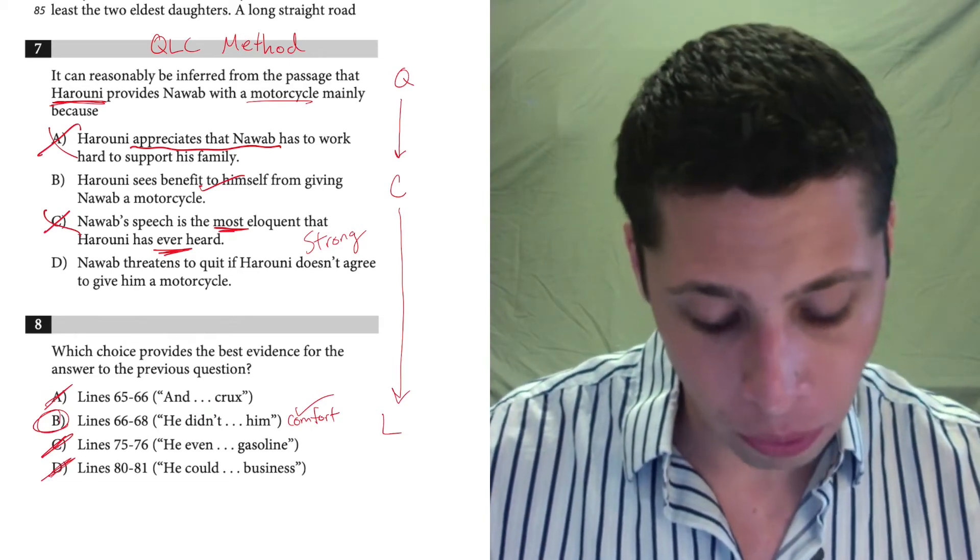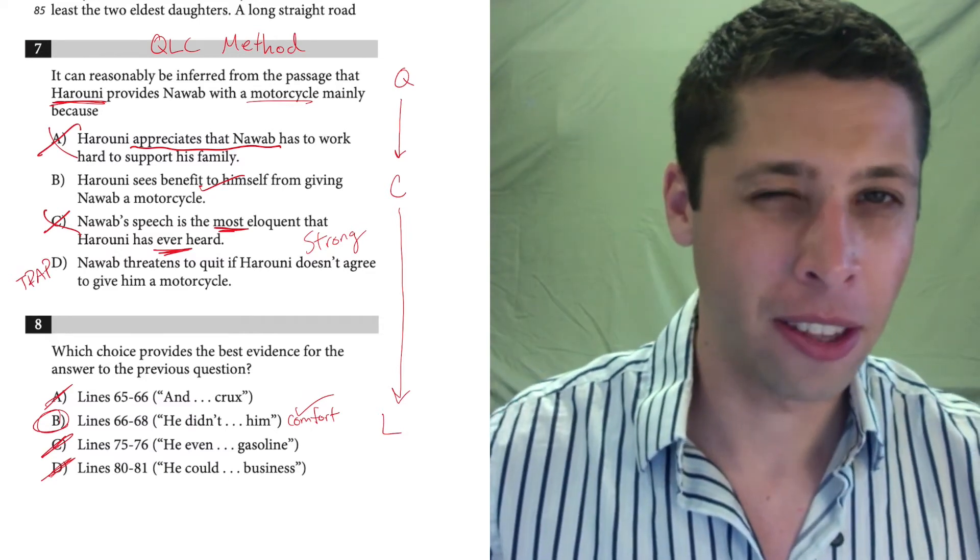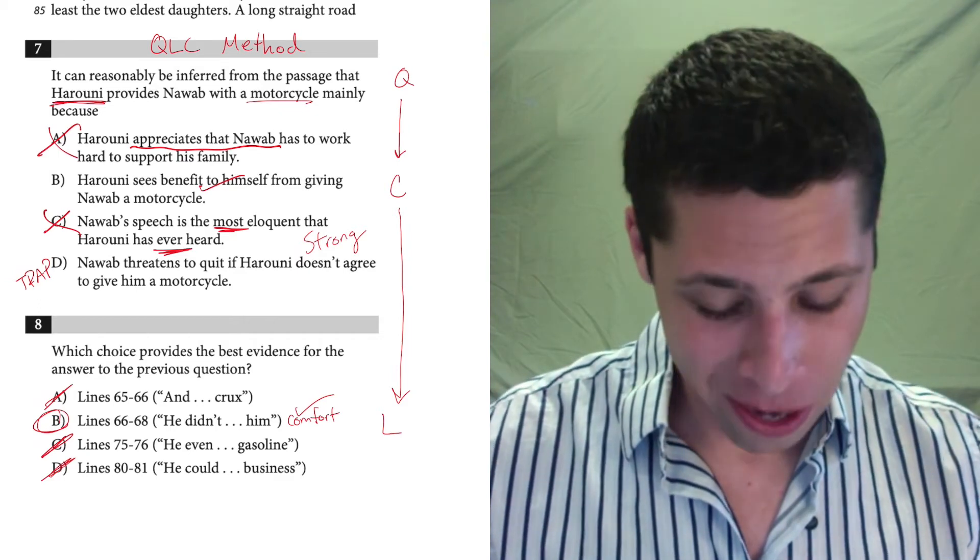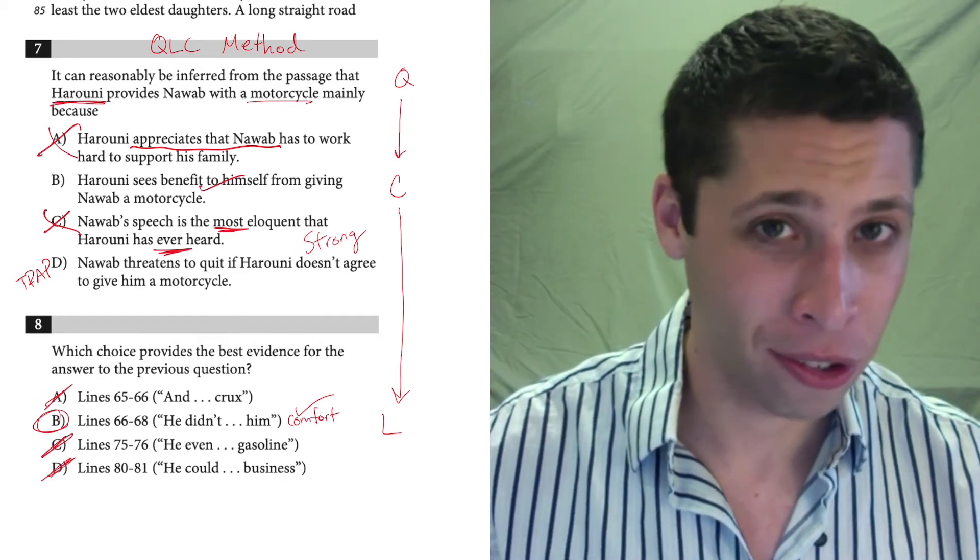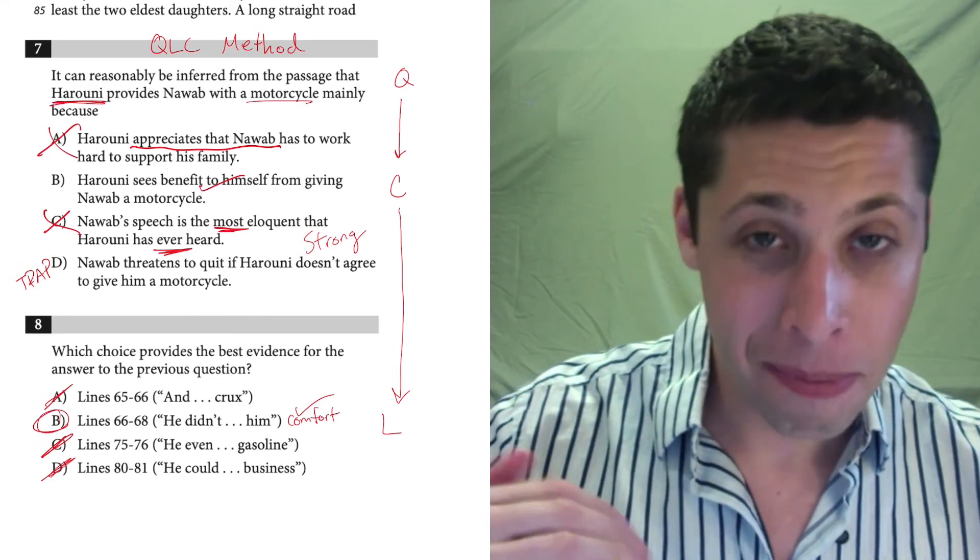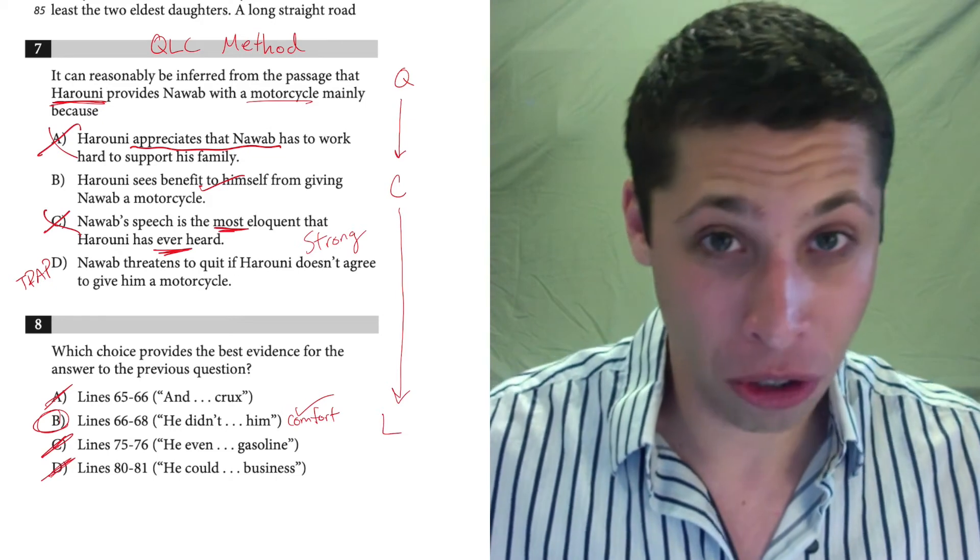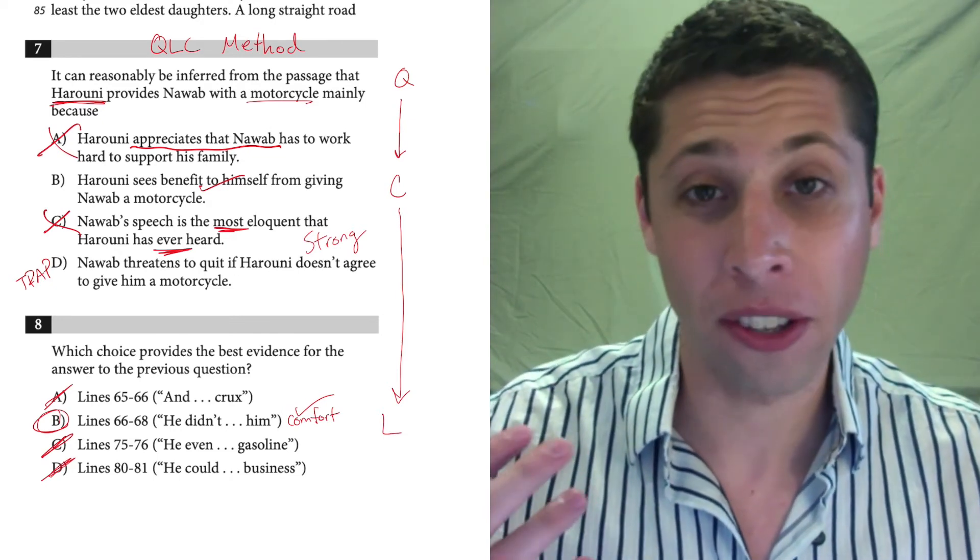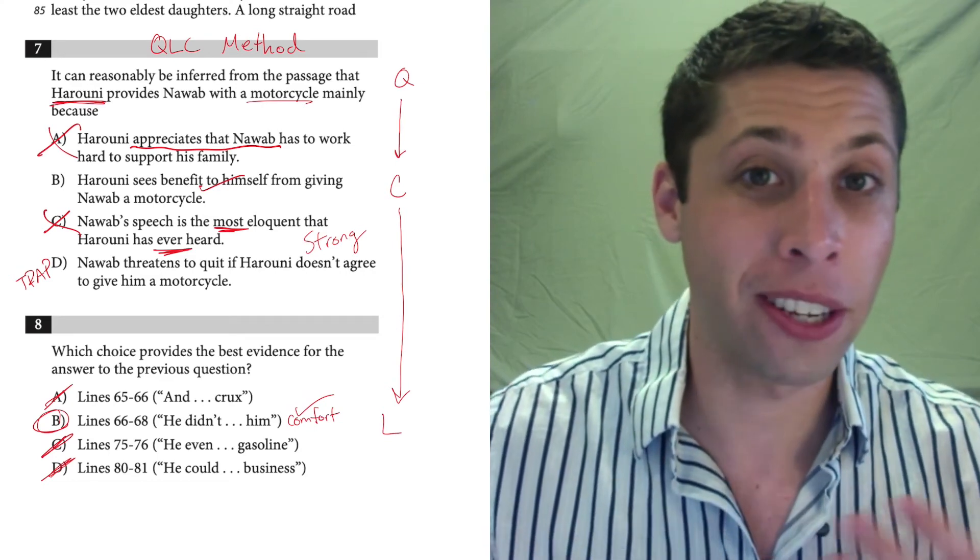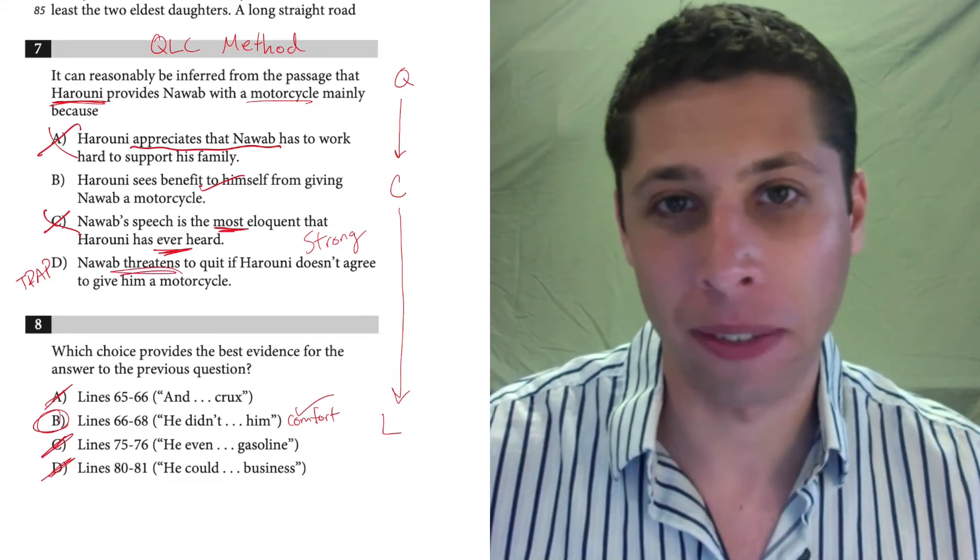Choice D, Nawab threatens to quit if Haruni doesn't agree to give him a motorcycle. This is a choice that a lot of people pick because we read in other places that there's a little bit of this going on. That there's this kind of quid pro quo, I'll keep working for you if you give me the motorcycle. But, notice that wasn't in the evidence that we were given for this question. This happens a lot. This is why I said everything needs to match up. We need to follow the QLC method and make sure all three of these steps kind of go together. This may be the answer if we had the evidence choice to support it, but we don't. Plus, it is a little strong. Nawab isn't really threatening to quit. We saw this in the last, in question number five, actually. Nawab is kind of bluffing. He really just wants this motorcycle and he's using this kind of over-the-top language to get his way. So, he's not actually threatening to quit. He's more just kind of making a little bit of a stink so he can get what he wants.